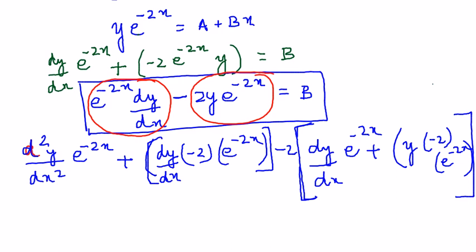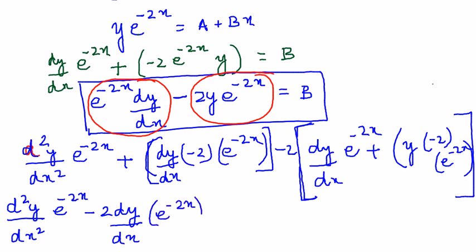Let us expand this. You get d squared y by dx squared e power minus 2x minus 2 dy by dx into e power minus 2x.